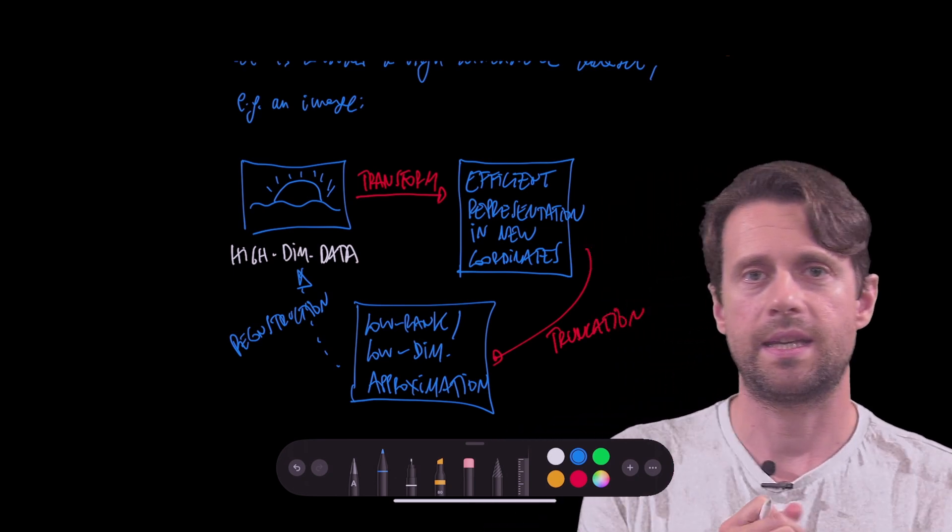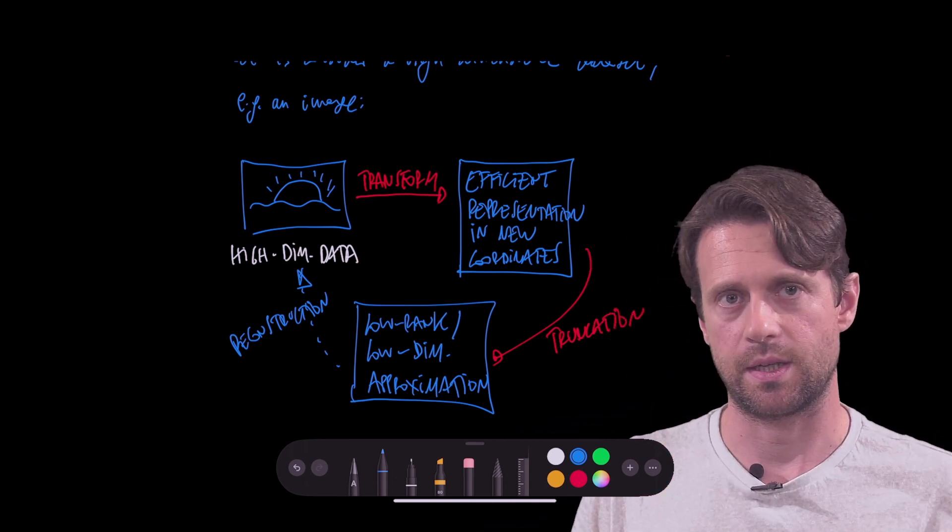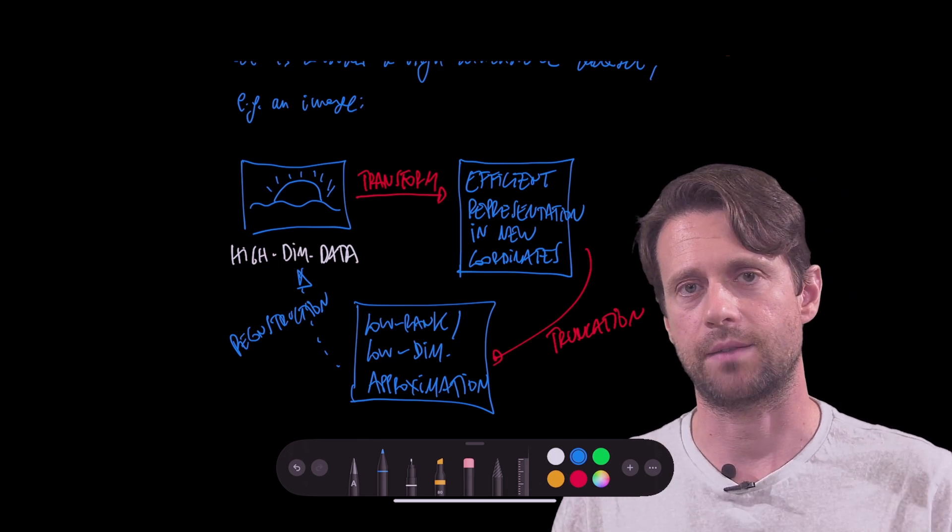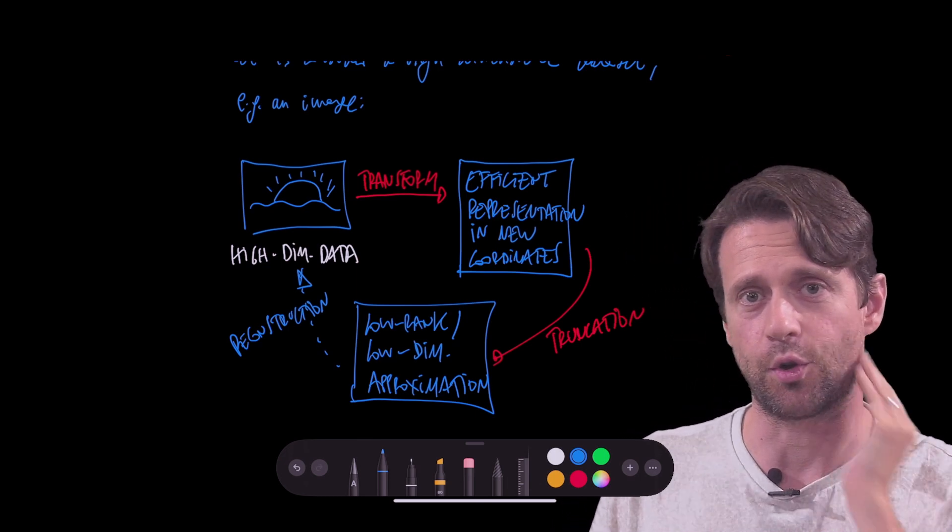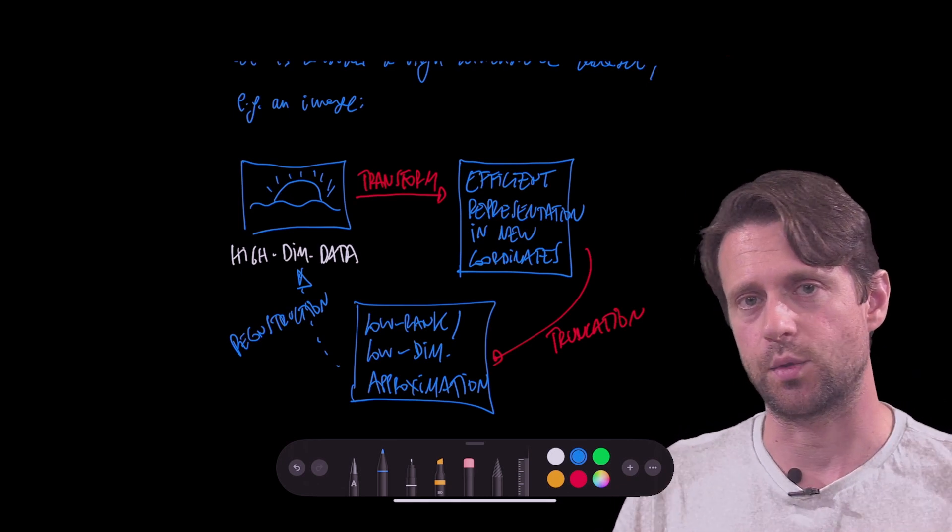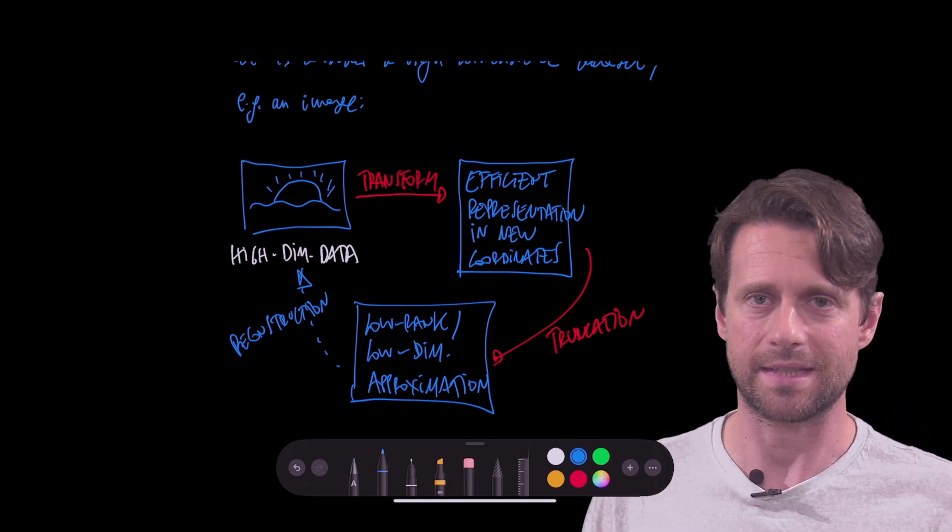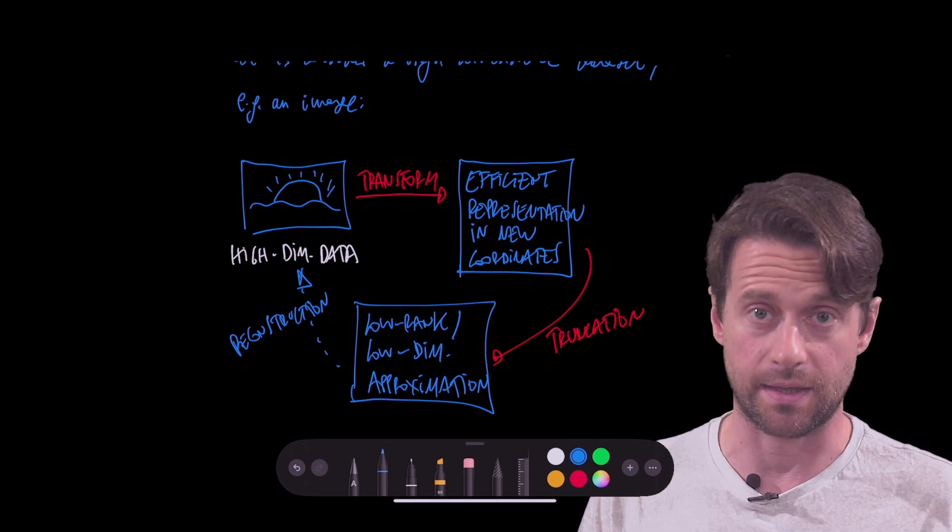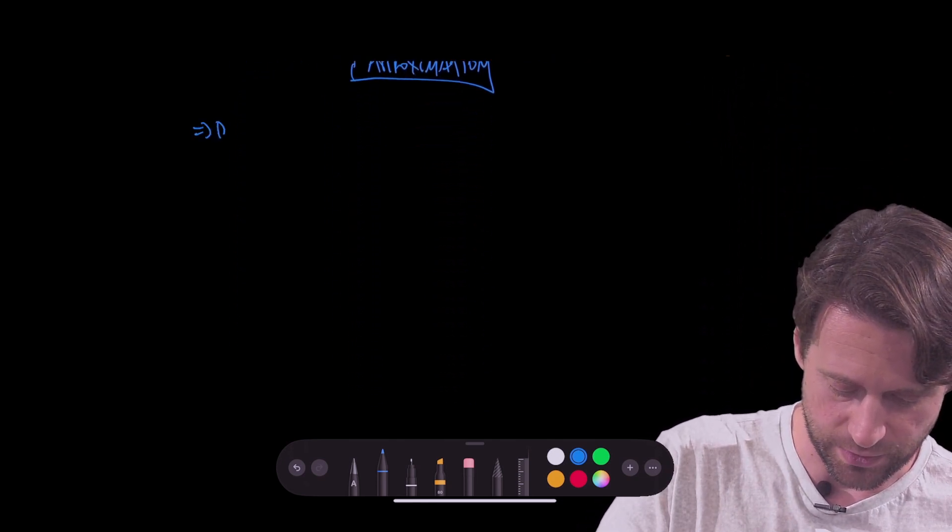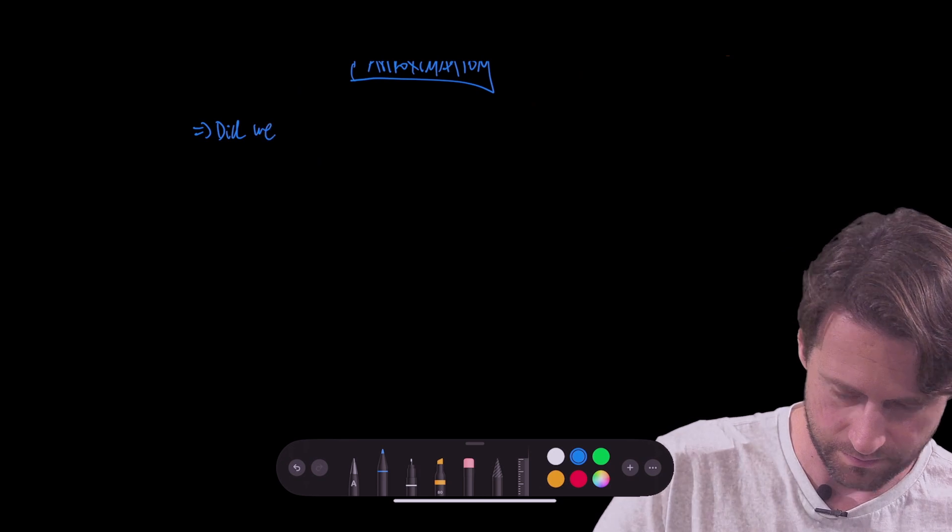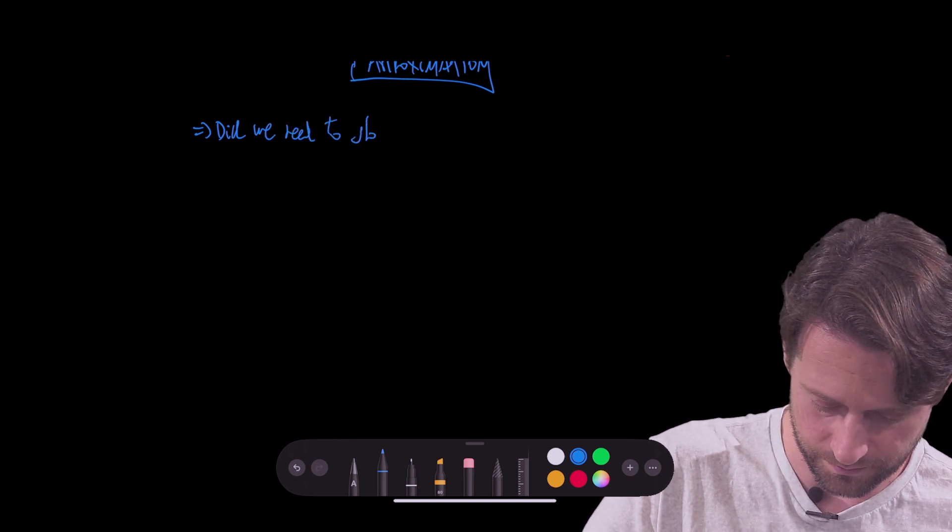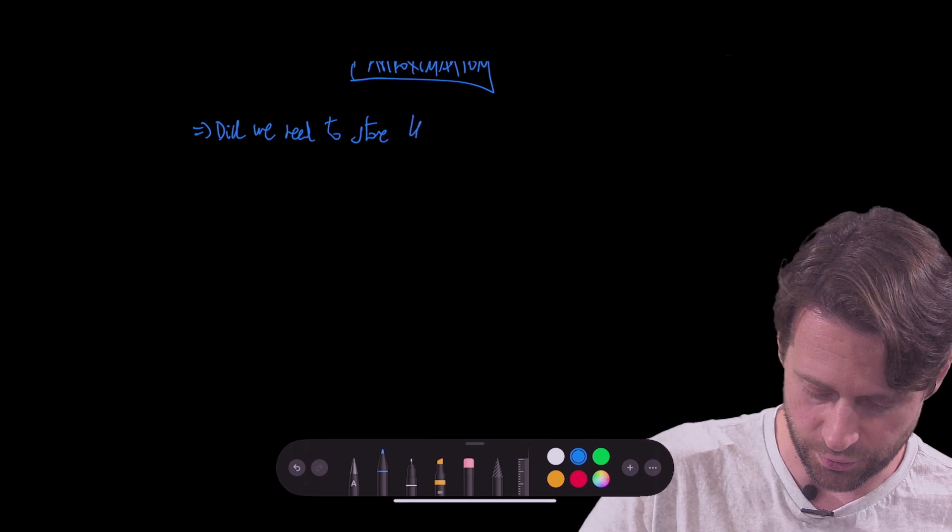Now, here we want to ask ourselves one question. We are storing data, right? Because we want to have the nice sunset and we want to have memories of when it's cold and dark. We want to remember those moments. Now, do we need the original data? Do we need the whole original data set? That's a little bit what we want to be thinking. Well, let's try to answer that question. Did we need to store the complete original data set?